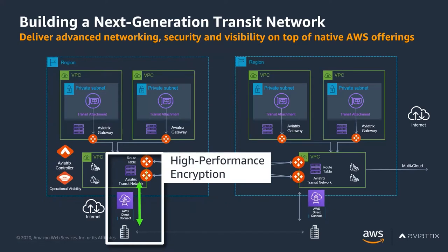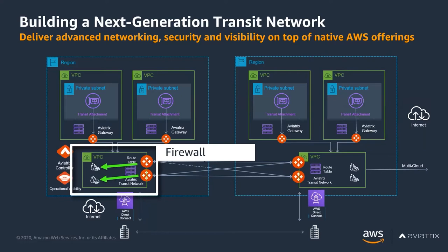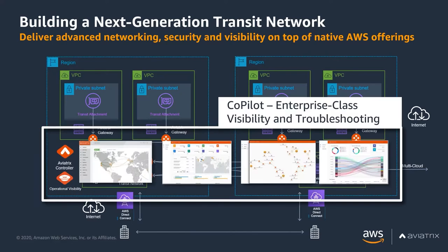You can also do high-performance encryption for your Direct Connect route. If you have a 10 gig Direct Connect, we can give you 10 gig of IPSec encryption over that — not just the 1.25 gigabits that you'd normally get — and again, 75 gig within the cloud. For egress filtering, to comply with regulatory compliance for outbound connections to the internet, if you want to centralize that function and connect it to your next-generation firewalls, we have what we call Firewall Network or FireNet, where we can orchestrate the deployment of your next-generation firewalls. And all of this feeds into the great visibility tools we talked about. With that, I'll turn it over to Dave.